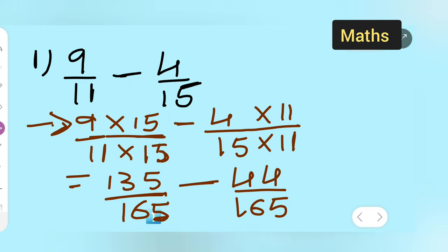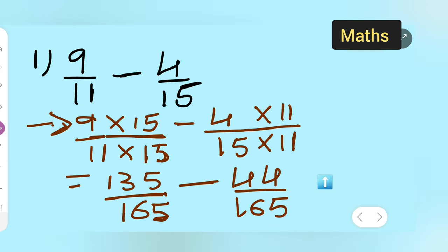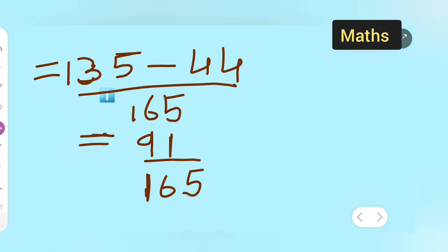Minus as it is. Now here the denominator is same. Take it as common, 165. So 135 minus 44 is here. Subtract this. What you will get? 135 minus 44 is going to give you 91, and 165 you all have to write it as it is. So this is your final answer. Once the denominator is same you can subtract.